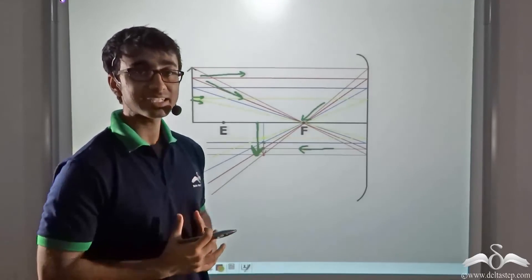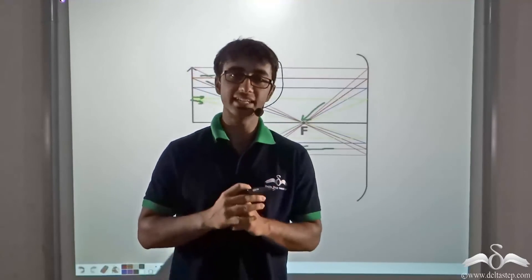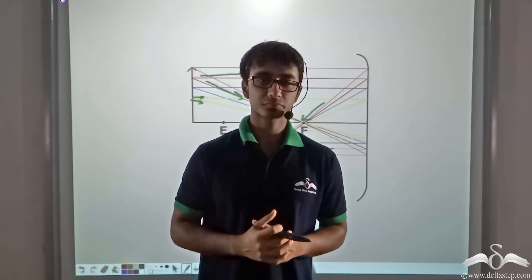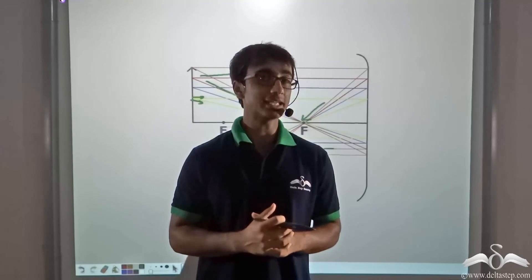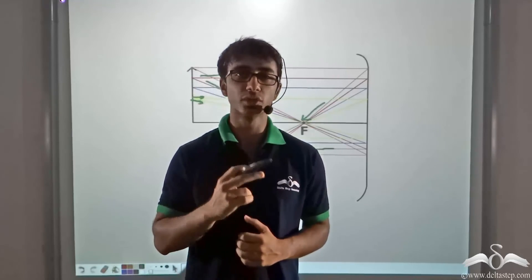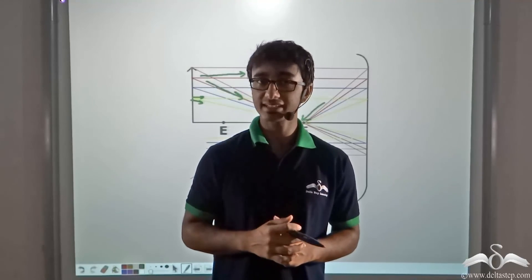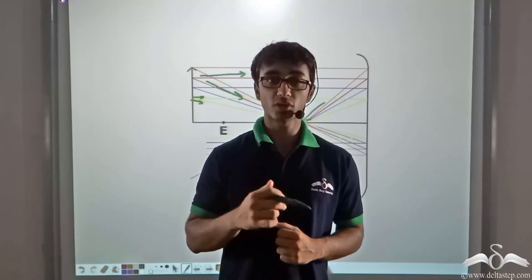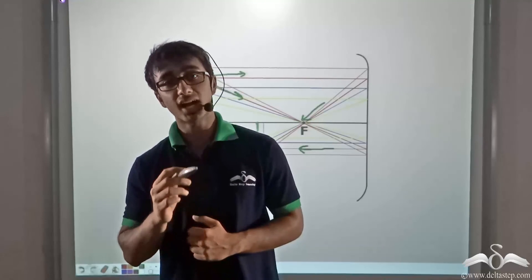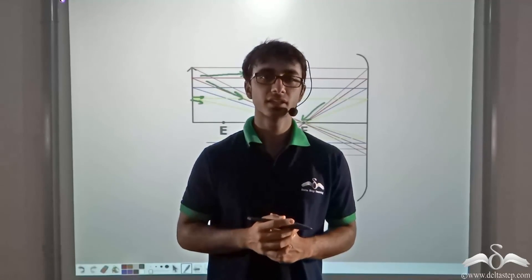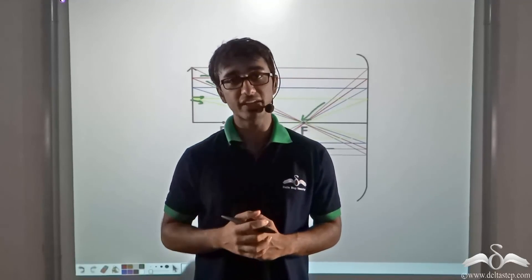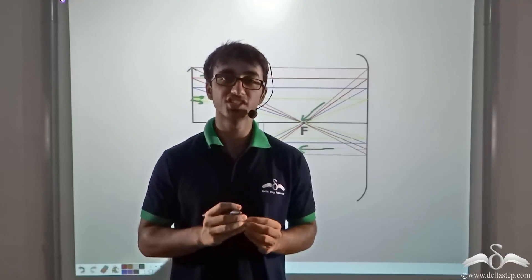So what did we learn? We learnt that a ray diagram can be used to obtain the image of an object. A ray diagram is a diagram used to obtain the location, type and size of the image. For drawing a ray diagram we consider two rays: one ray parallel to the principal axis, which passes through the focus or appears to diverge from the focus after reflection; and another ray that passes through the centre of curvature or appears to pass through it, and after reflection retraces its own original path.